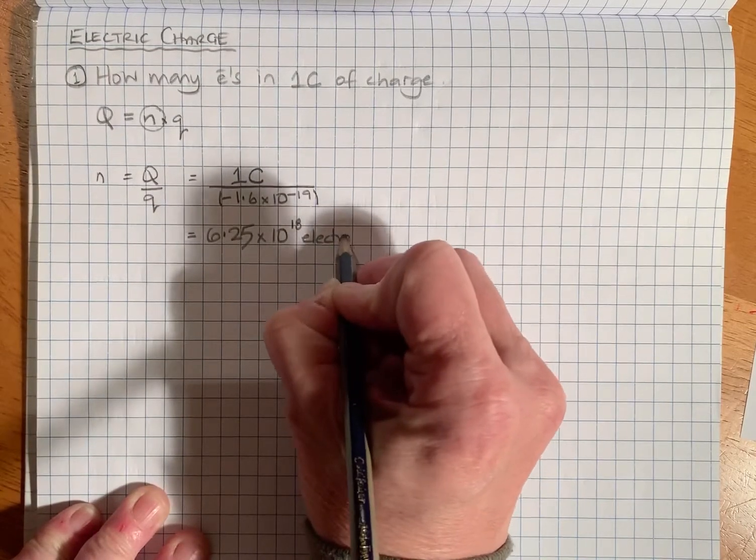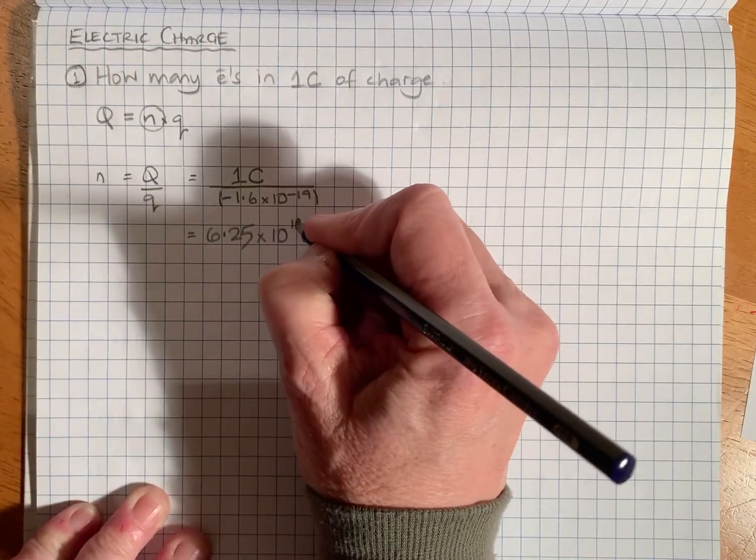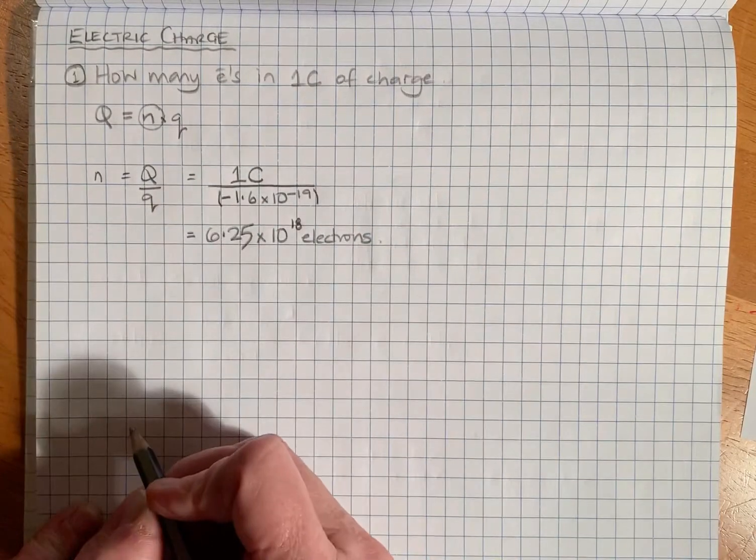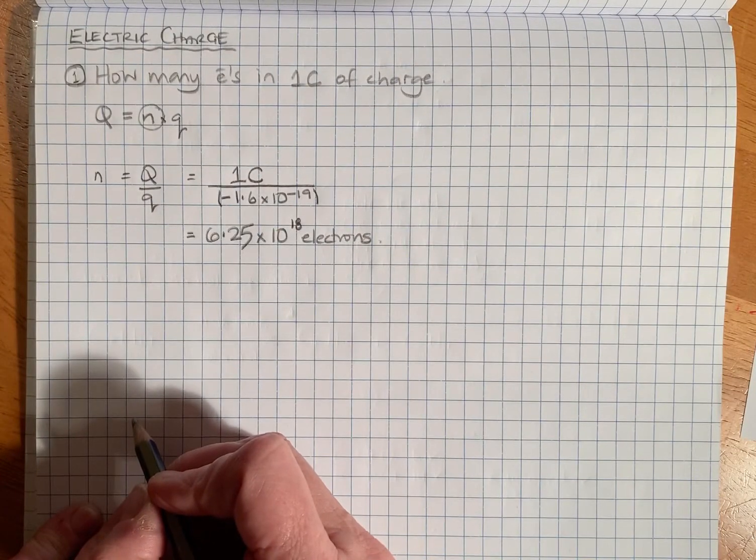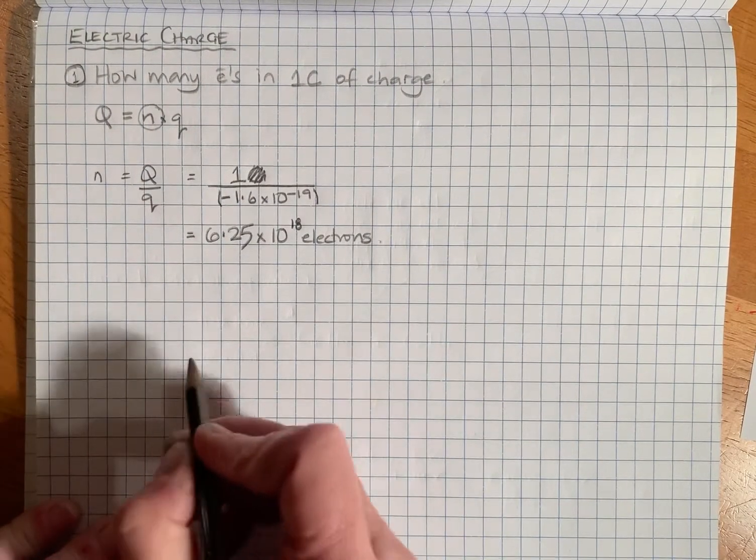Your calculator should give you 6.25 times 10 to the 18 electrons. As you would expect, that is a really big number. That's question one.